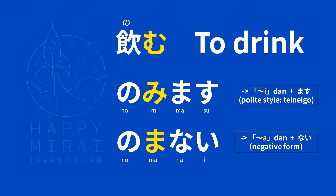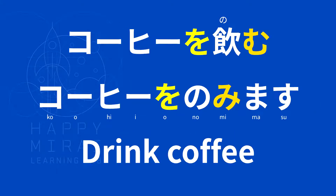Next verb: 飲む (nomu) — to drink. 飲みます (nomimasu). 飲まない (nomanai). Example: コーヒーを飲む (koohii wo nomu). Over here, を (wo) is the object marker. コーヒーを飲みます (koohii wo nomimasu) — drink coffee.